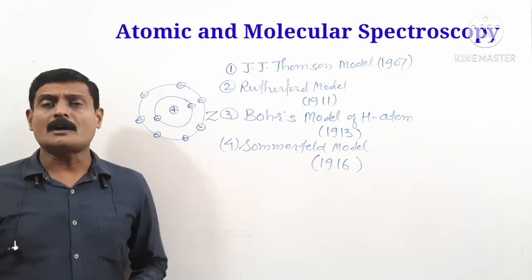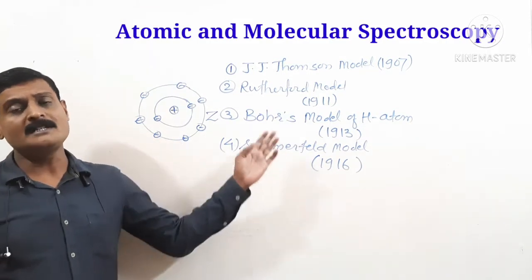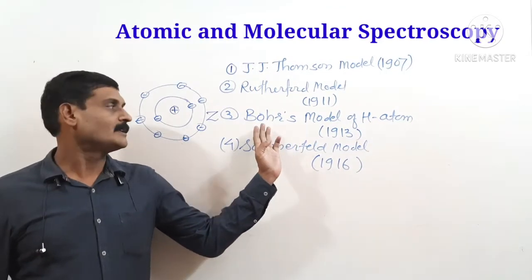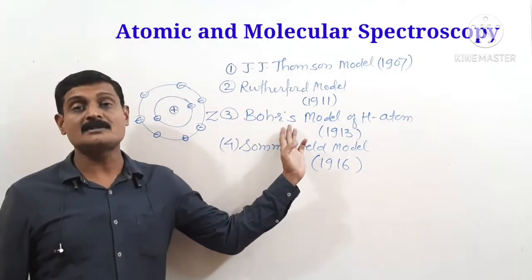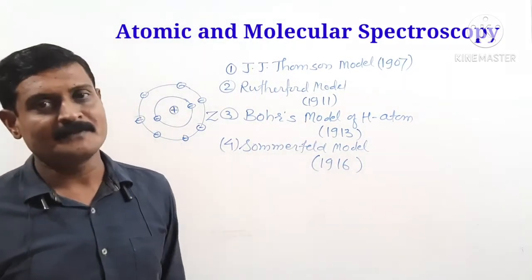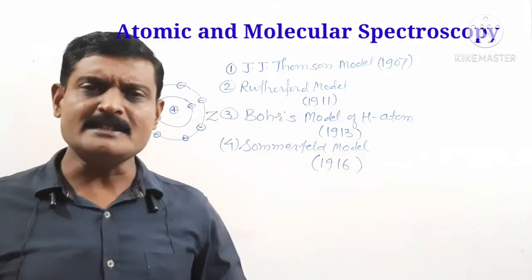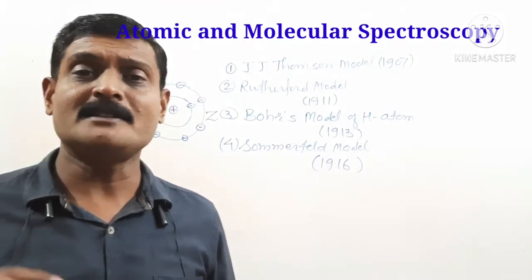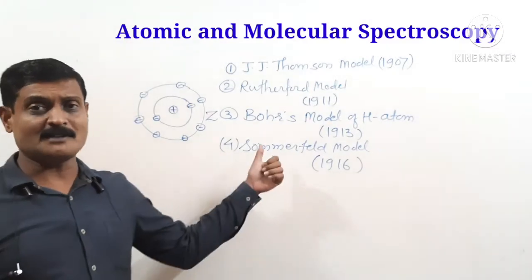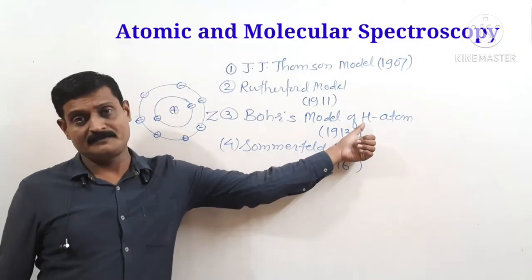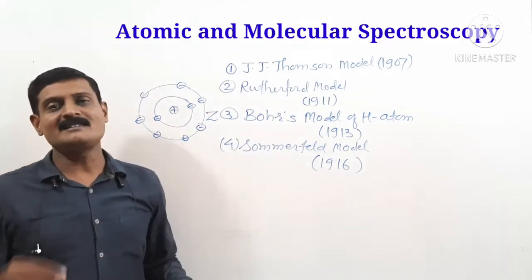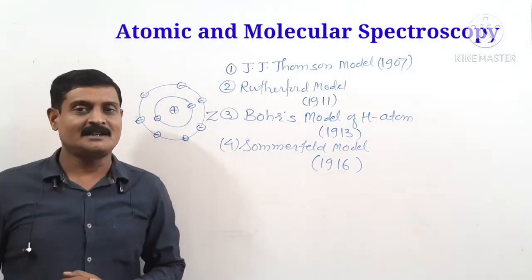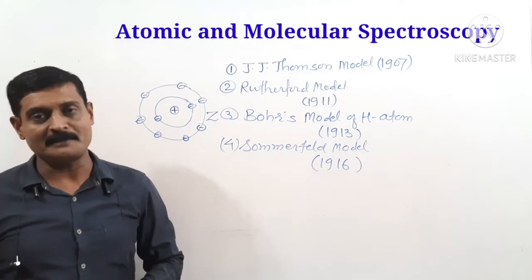These drawbacks were overcome by Niels Bohr, who extended the model. This is known as Bohr's model of the hydrogen atom. It is the simplest model of the atom because hydrogen has atomic number one — only one proton and one electron revolving around the nucleus in a stable circular orbit.